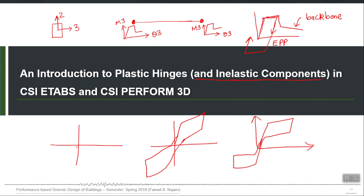There can be different templates of cyclic behavior; we call them hysteretic models. Many models are available in different programs, which we can assign to our plastic hinge backbone curve depending on what type of beam it is. If we have a steel beam, a bilinear behavior is more suitable. If it is a concrete beam, then the Takeda model or another degrading model may be appropriate, because concrete degrades as it undergoes cycles of loading. So there are two components: the backbone and the hysteretic model.